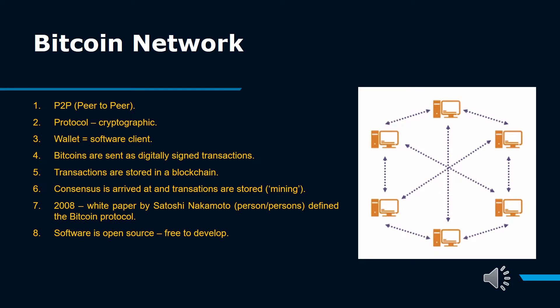To understand the Bitcoin network, we need to have good knowledge of networking. Bitcoin network is a peer-to-peer payment network that operates on a cryptographic protocol. Users send and receive Bitcoins, the units of currency, by broadcasting digitally signed messages to the network using Bitcoin cryptocurrency wallet software. Transactions are recorded into a distributed, replicated public database known as the blockchain, with consensus achieved by a proof-of-work system called mining.